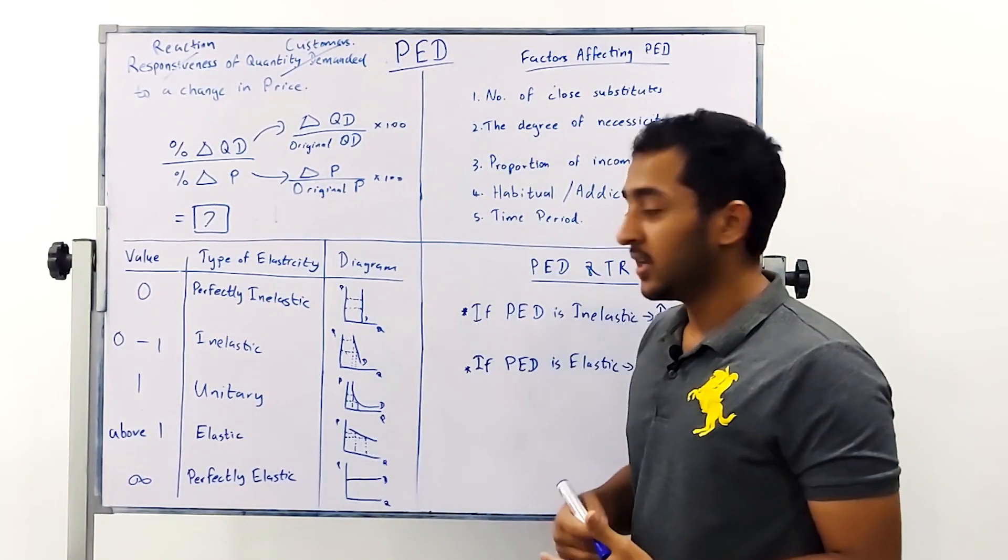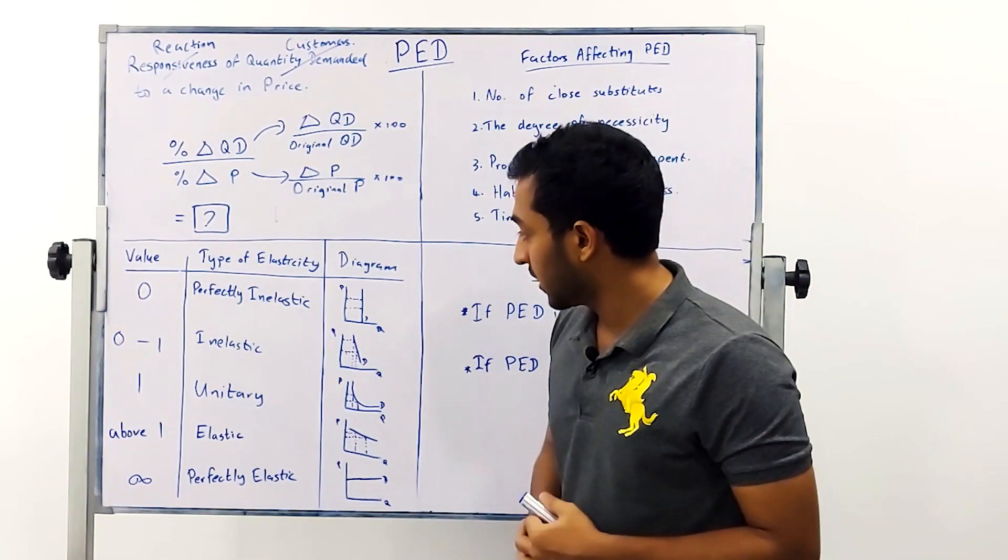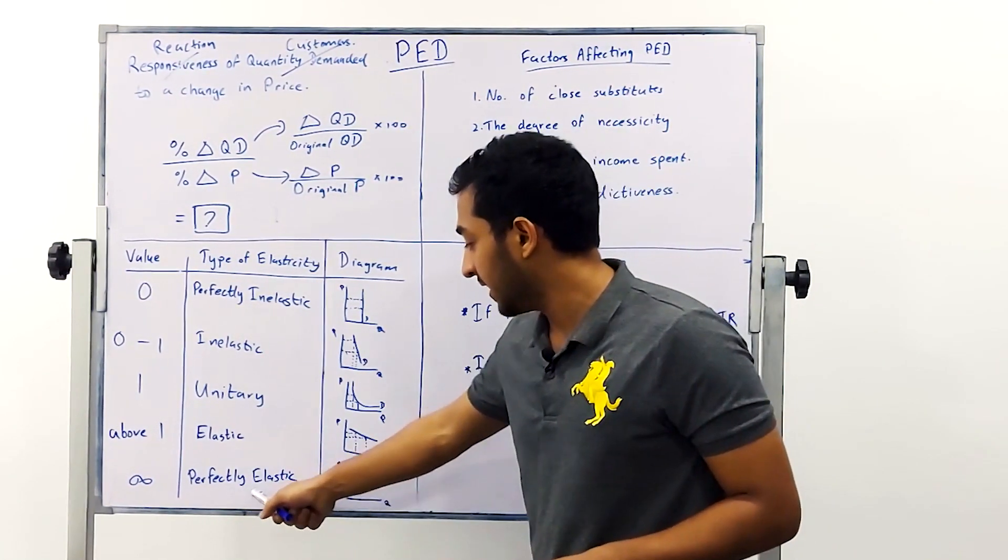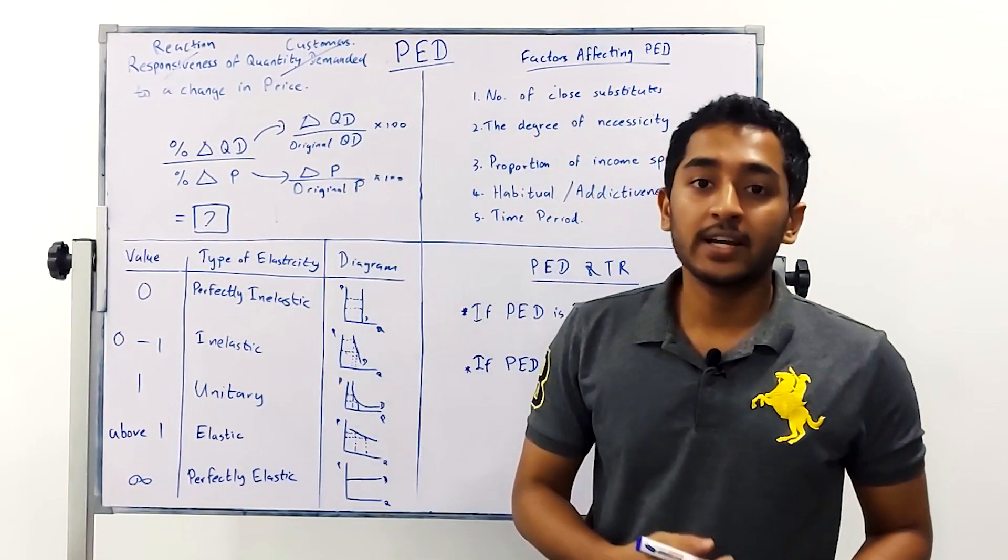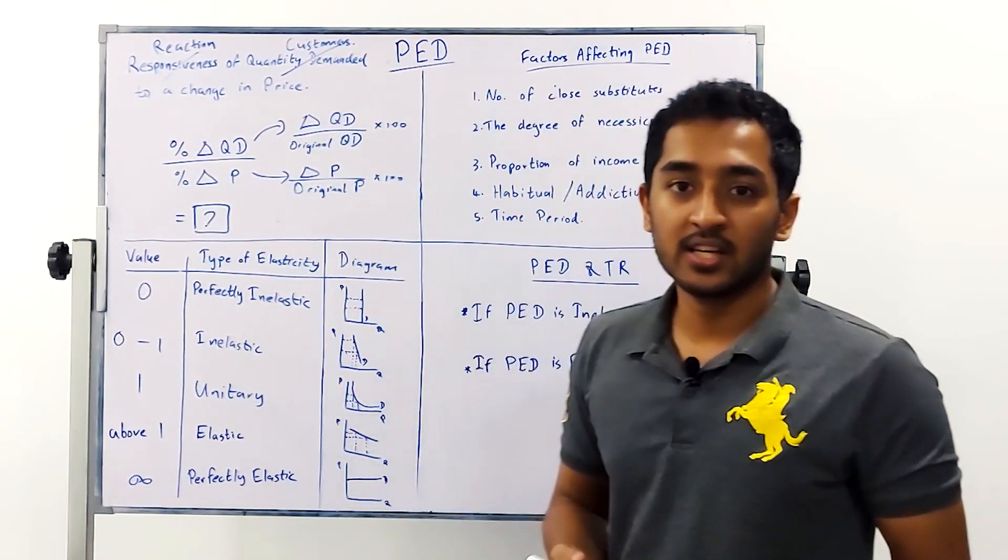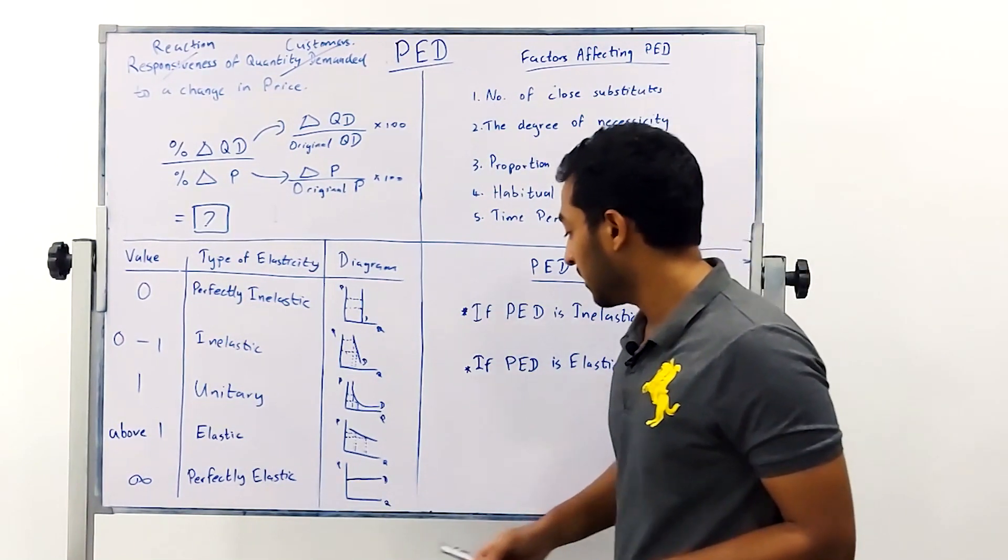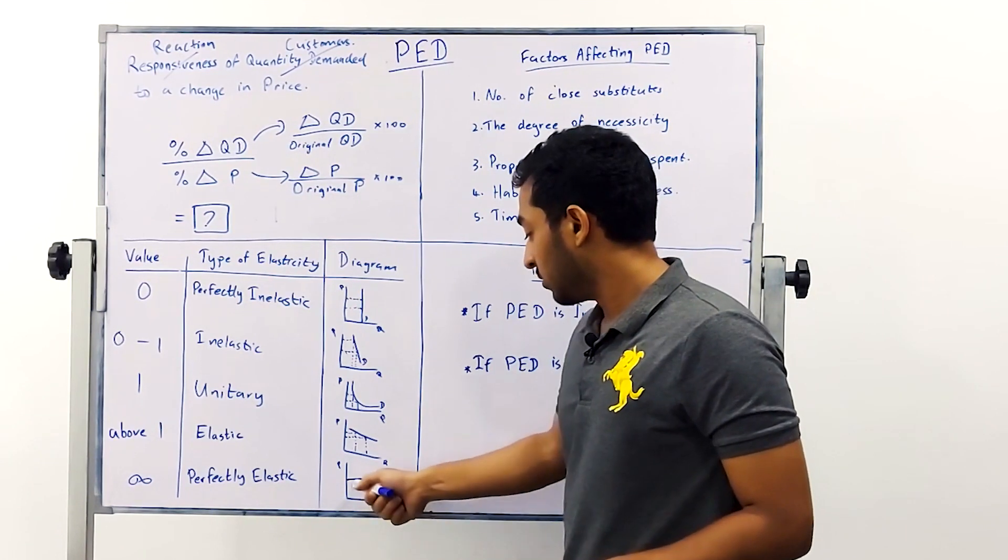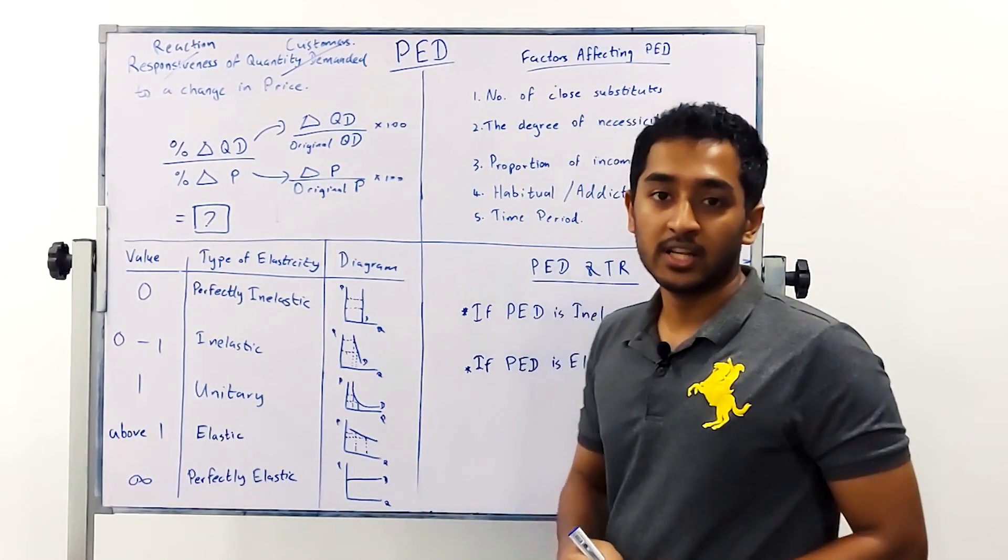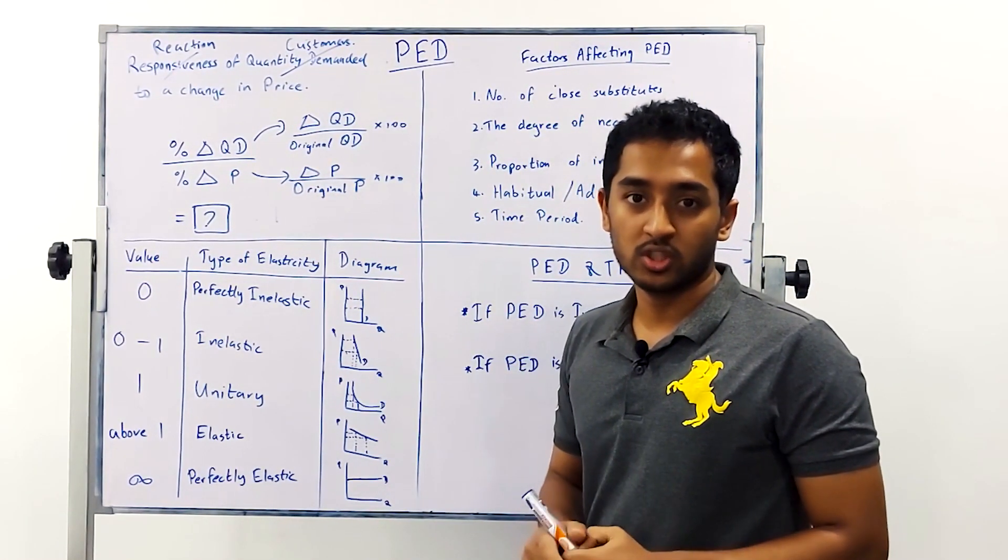And the last of the categories is perfectly elastic which has an infinite value. Again an infinite value indicates that it's a very theoretical concept. Your curve will be perfectly horizontal here which indicates an infinite change in customers when you change your price.